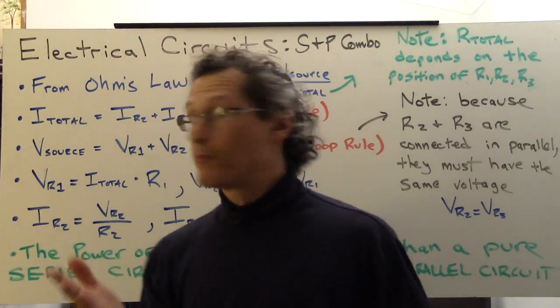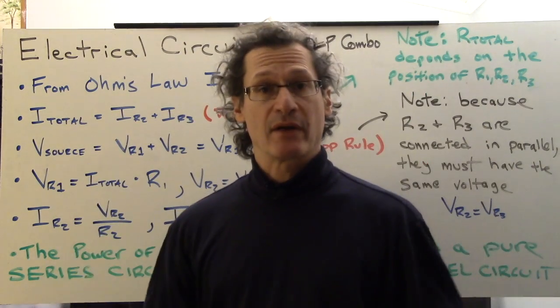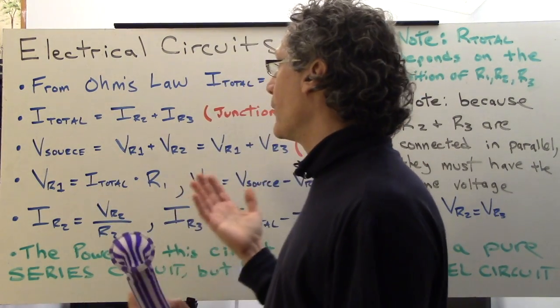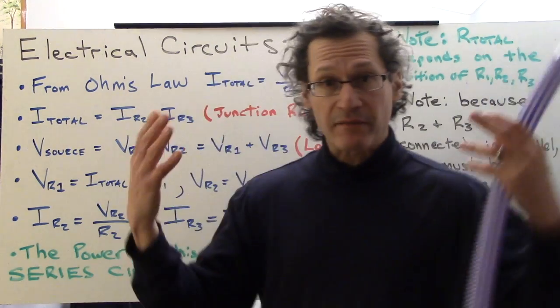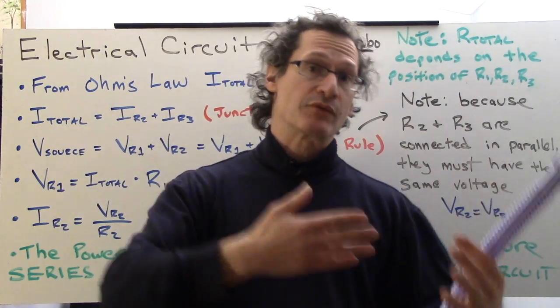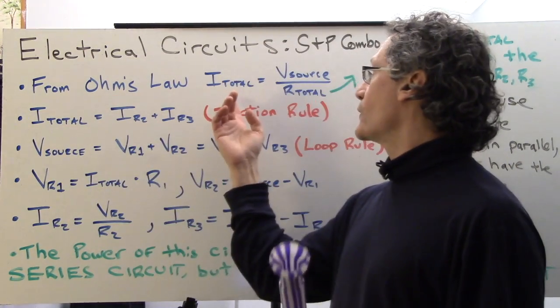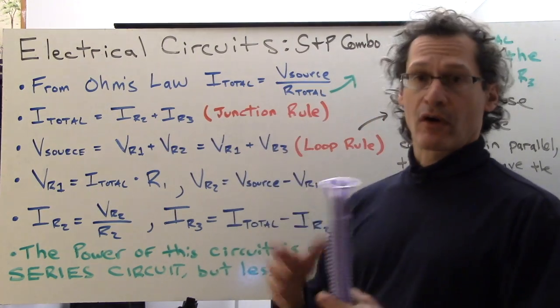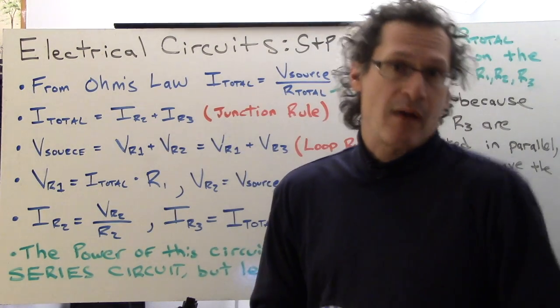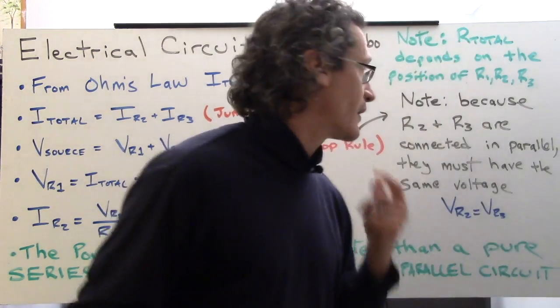So here we go. There's some bullet points regarding the series and parallel combination circuit. From Ohm's law, we'll note that we can find I total once we've found R total like we did before. So I total is just V source over R total. R total is that combination series, parallel combination calculation.